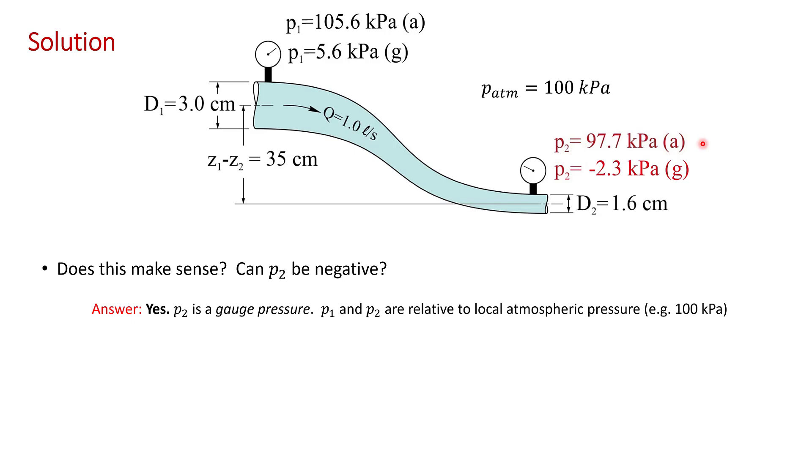Again, I've used G and A to indicate gauge and absolute pressures. This is a common nomenclature that you should get used to.